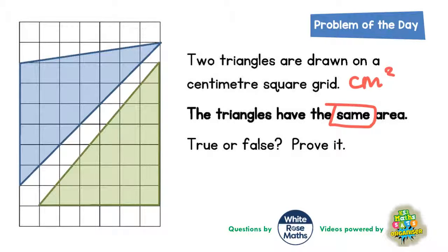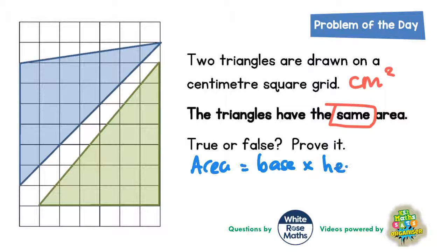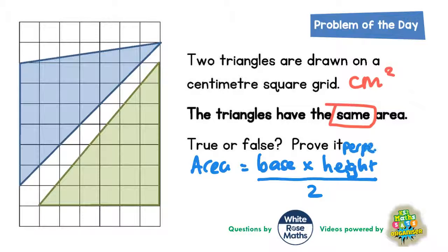You should know that the area of a triangle is found when you multiply the base of the triangle by the height of the triangle and then divide that answer by two. Now this height we're talking about is called the perpendicular height, which we'll discuss a bit later.